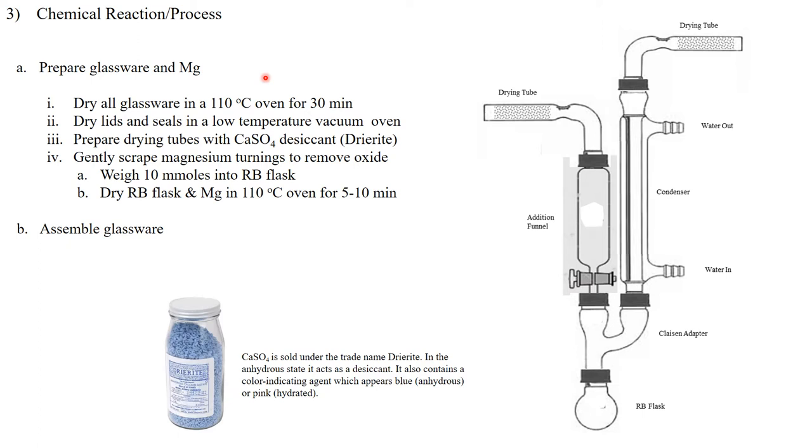The first thing we do, we need to dry all our glassware. If we have a chemical reaction that's water sensitive, water can absorb onto the surface of glassware. So we're going to bake it at 110 degrees Celsius for 30 minutes. Some things we can't bake at that high temperature like the lids and the o-rings and the seals that are in our system. So we're going to put those in a low temperature vacuum oven and actually pump on them for several hours, in this case overnight. We also need to make sure that during the chemical reaction we don't get moisture coming in from the atmosphere. So we're going to set up our system with these drying tubes and we're going to fill those with calcium sulfate which is a desiccant, meaning it absorbs moisture that passes by it.